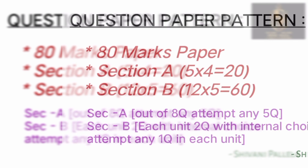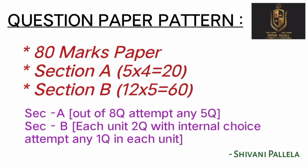The question paper has 80 marks total. Section A has short answer questions — eight questions, each carrying four marks, making Section A a total of 20 marks. Short questions are from all five units, eight questions overall. Then there is Section B.